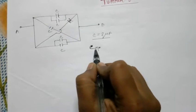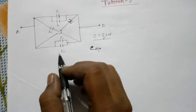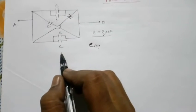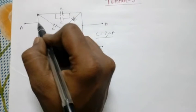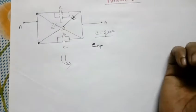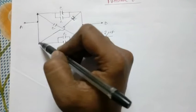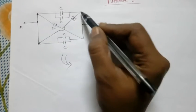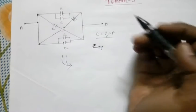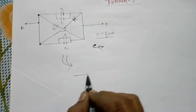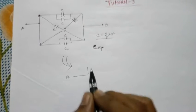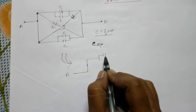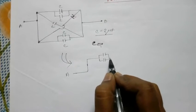How do we find C equivalent? Let's start by redrawing the circuit. Check how many nodes there are — that node and that node are just the same, so this is A and this is also A. On the other side, these two nodes are the same as B. If you redraw the circuit, from A we have C and C in parallel.